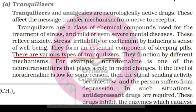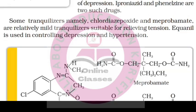There are various types of tranquilizers that function by different mechanisms. Noradrenaline is one of the neurotransmitters that plays a role in mood changes. If the level of noradrenaline is low, then the signal-sending activity becomes low and the person suffers from depression. In such situations, anti-depressant drugs are required. A mild tranquilizer, equanil, is used in controlling depression and hypertension.